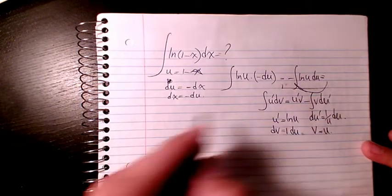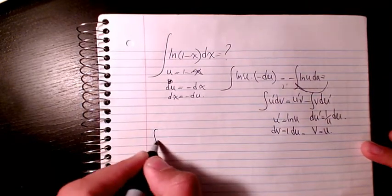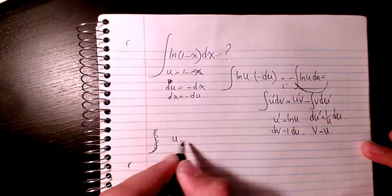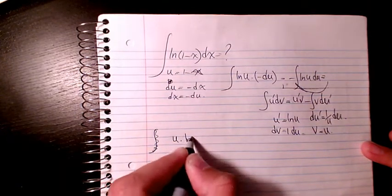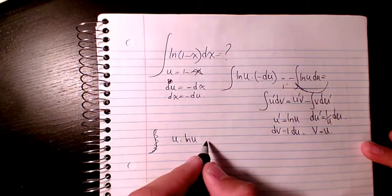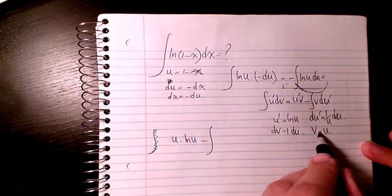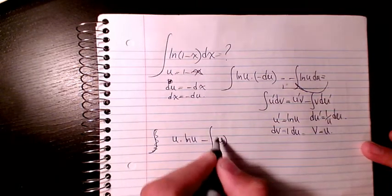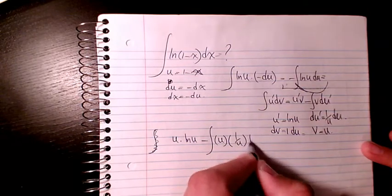So u times v, which is u ln(u), minus integration of v times du prime. So u times 1 over u du.